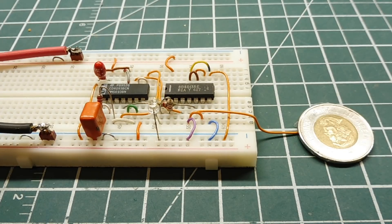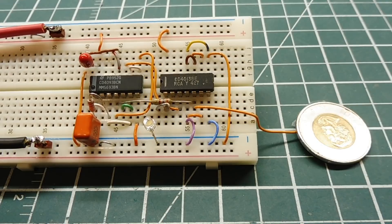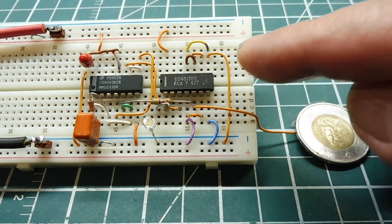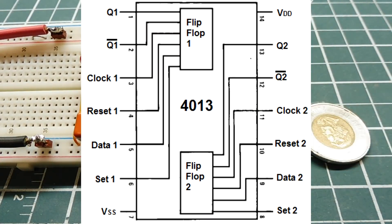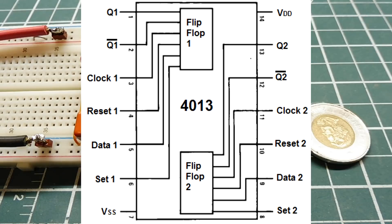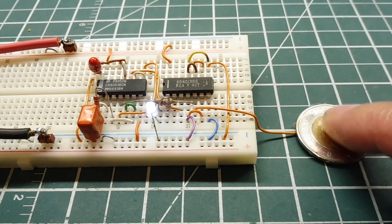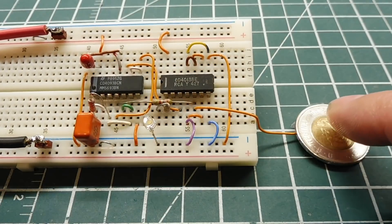So the first IC there is the CD4093, that's a Schmidt trigger NAND gate, and there's four NAND gates on that chip. The second IC is the CD4013, and it's a dual D flip-flop, and I'm only going to use one of the flip-flops in this circuit. So we're going to have a look how to build this circuit and how it works.